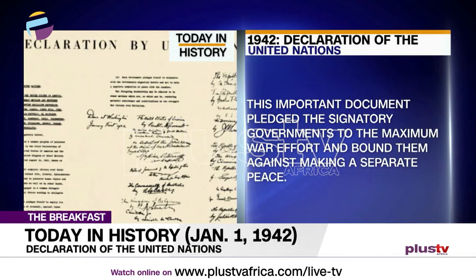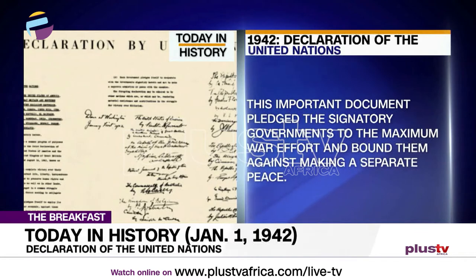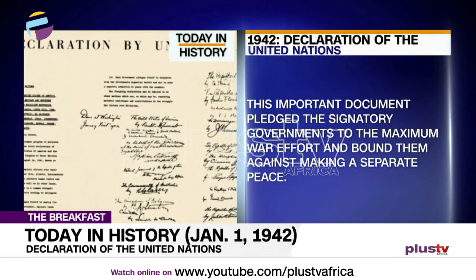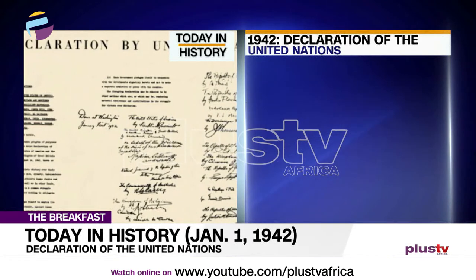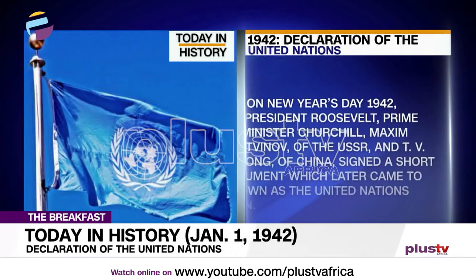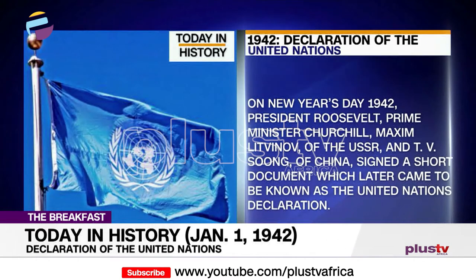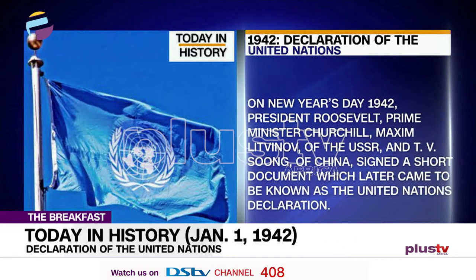The first president to sign was the U.S. president at the time, Roosevelt, Prime Minister Churchill, Maxim Litvinov of the USSR, and T.V. Soong of China. They signed the short document which was later to be known as the United Nations Declaration.